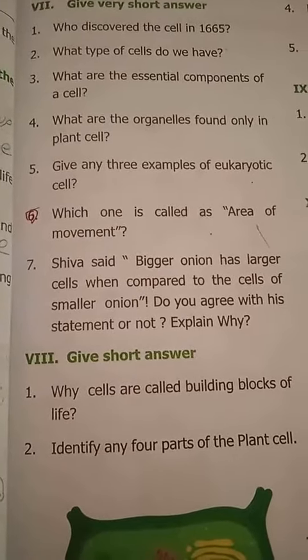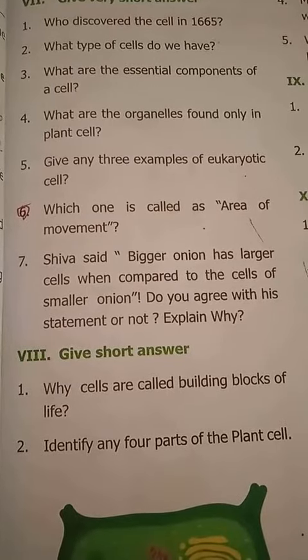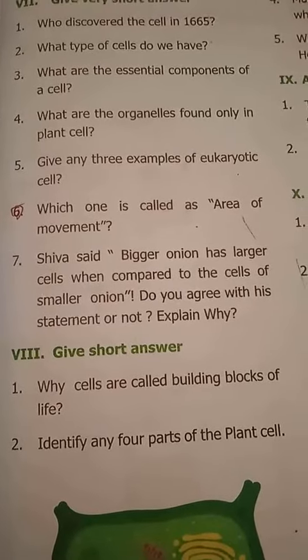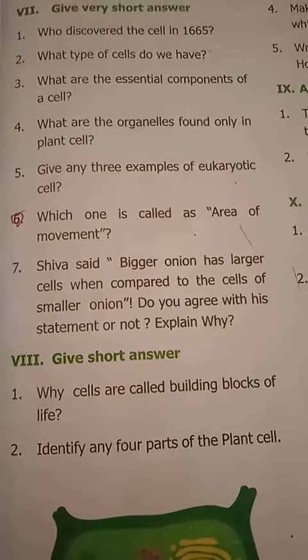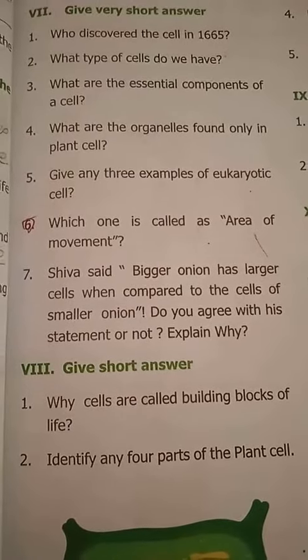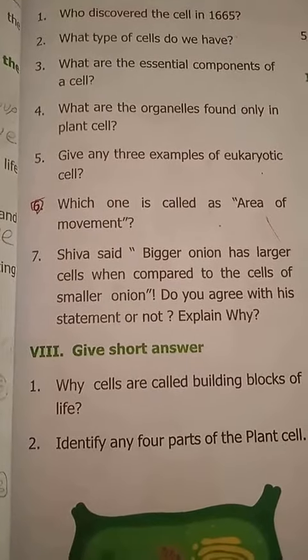Question number 5: give any three examples of eukaryotic cells. Three examples of eukaryotic cells are: animal cells, plant cells, and fungus — all are eukaryotic cells.